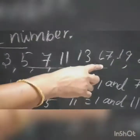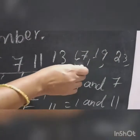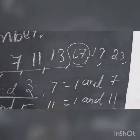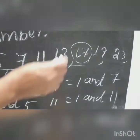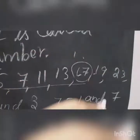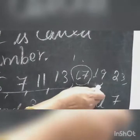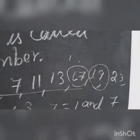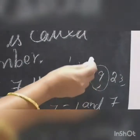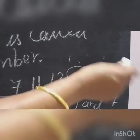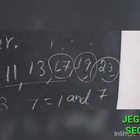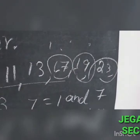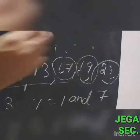For example, the factors of 17 are 1 and 17 only. The factors of 19 are 1 and 19 only. The factors of 23 are 1 and 23 only — no other factors.